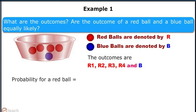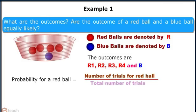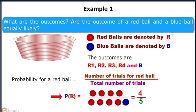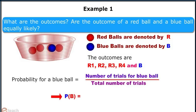Now the probability for a red ball equals number of trials for red ball divided by the total number of trials. So the probability of getting a red ball comes out to be 4/5. Similarly, the probability for a blue ball equals 1/5.